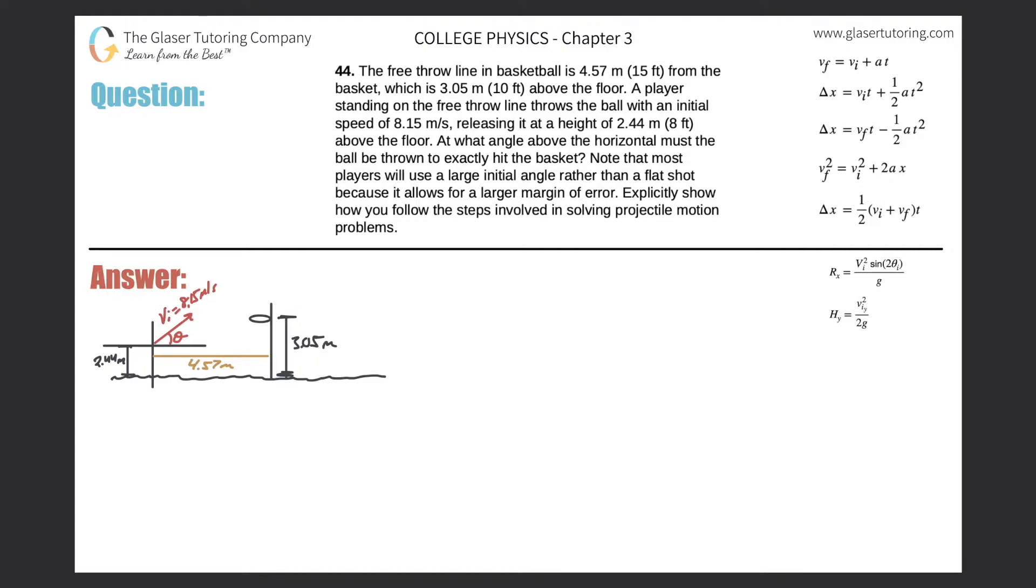Number 44. The free throw line in basketball is 4.57 meters from the basket, which is 3.05 meters above the floor. A player standing on the free throw line throws the ball with an initial speed of 8.15 meters per second, releasing it at a height of 2.44 meters above the floor. At what angle above the horizontal must the ball be thrown to exactly hit the basket?